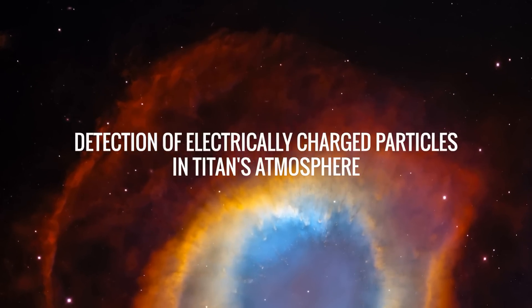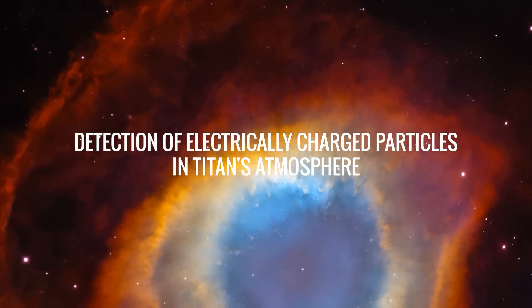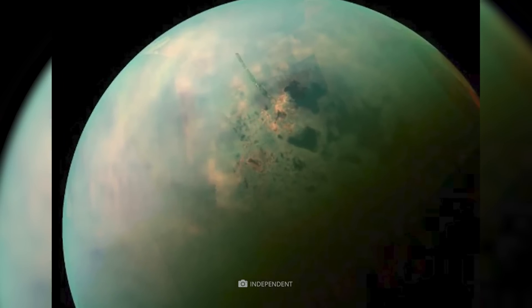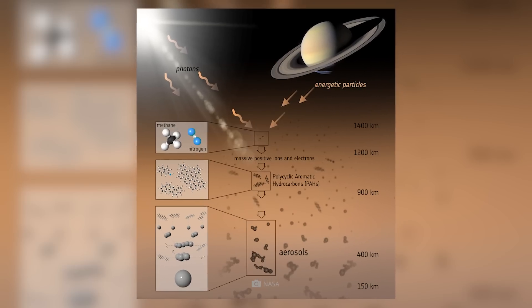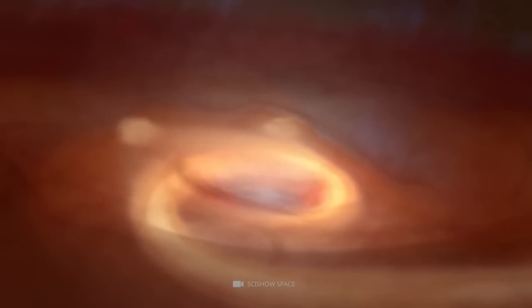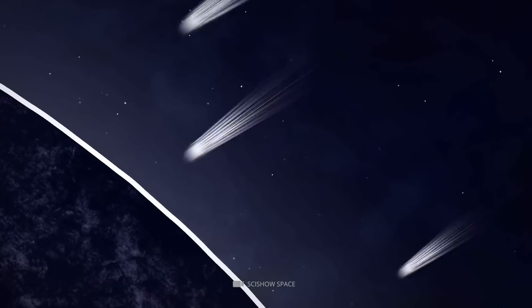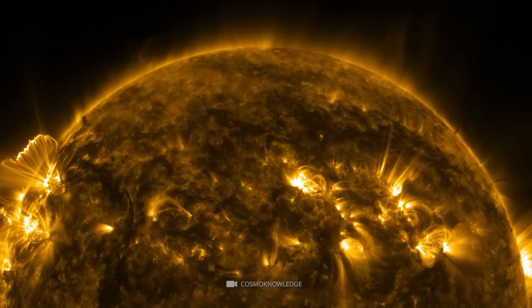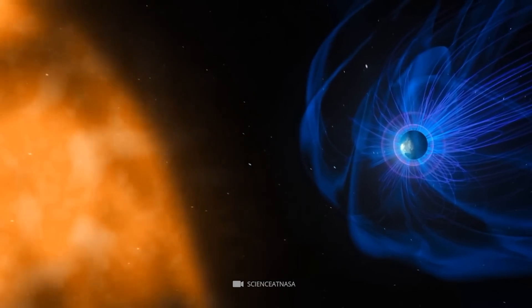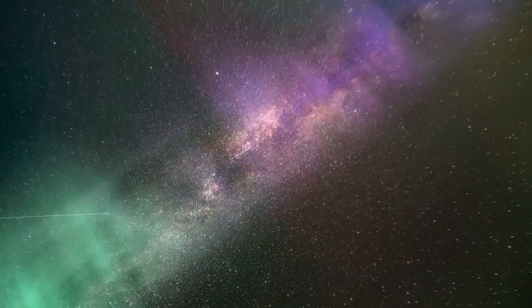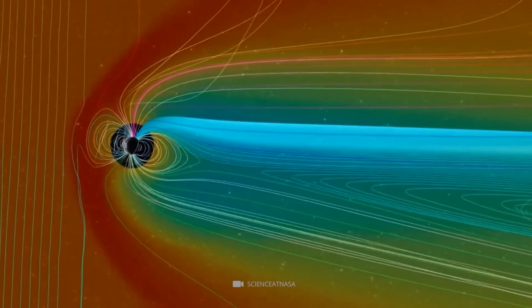Detection of electrically charged particles in Titan's atmosphere. Another fascinating discovery on Titan is the detection of electrically charged particles in its atmosphere. These particles, called ions, are thought to be produced by interactions between Titan's atmosphere and the solar wind, a stream of charged particles flowing from the Sun. The solar wind strips electrons from atoms in Titan's upper atmosphere, creating ions that are then carried along by the moon's magnetic field. This creates an ionosphere, a region of electrically charged particles that surrounds the moon and interacts with the solar wind.